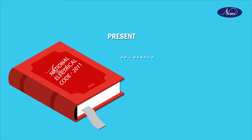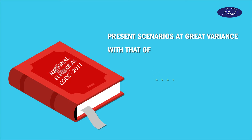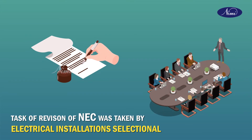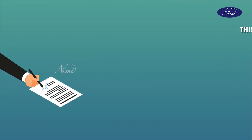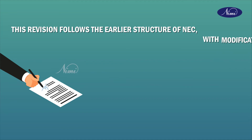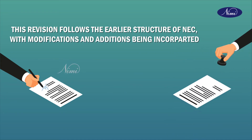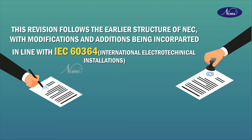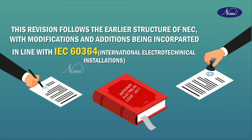In the present scenario, there is a vast variation from the National Electrical Code which was formulated in 1985. The task of revision of NEC was taken up by the Electrical Installation Sectional Committee. The revision follows the earlier format of NEC with modifications and additions in line with the IEC — International Electro-Technical Committee — series 60364 on Electrical Installation.